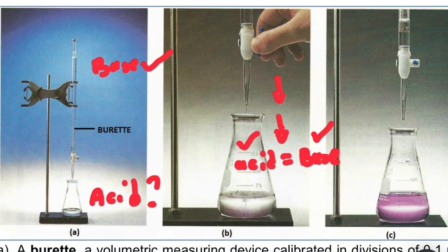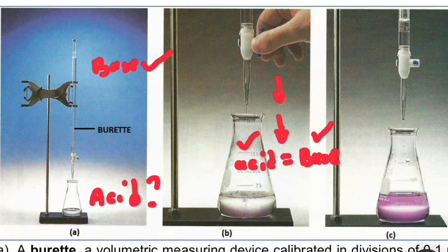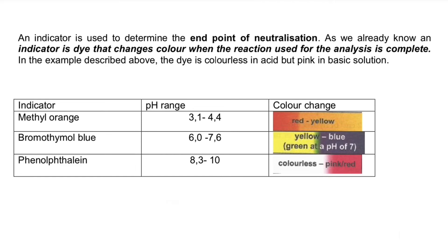An indicator is used to determine the endpoint of neutralization. We have three indicators: methyl orange, bromothymol blue, and phenolphthalein. If you expect the endpoint of neutralization to be reached when the pH is between 3 and 4.4, you use methyl orange. If you expect the reaction at the point of neutralization to be around pH 7, you use bromothymol blue.